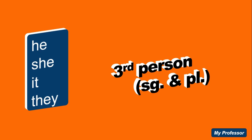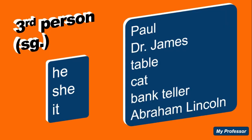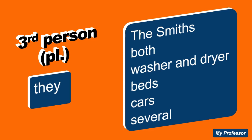When we talk about the third person, remember there is third person singular and third person plural. Third person singular would be he, she, it — but not only these words, because you can have a name like Dr. James, an object like a table, a being like a cat, a profession like a bank teller, or a historical figure like Abraham Lincoln. When we talk about third person plural, we refer to 'they,' and this also appears in other forms like the Smiths, or both washer and dryer, beds, cars, several, and so on.